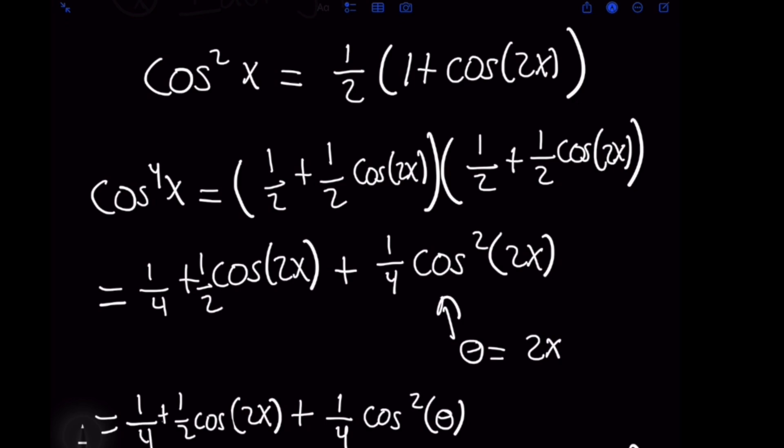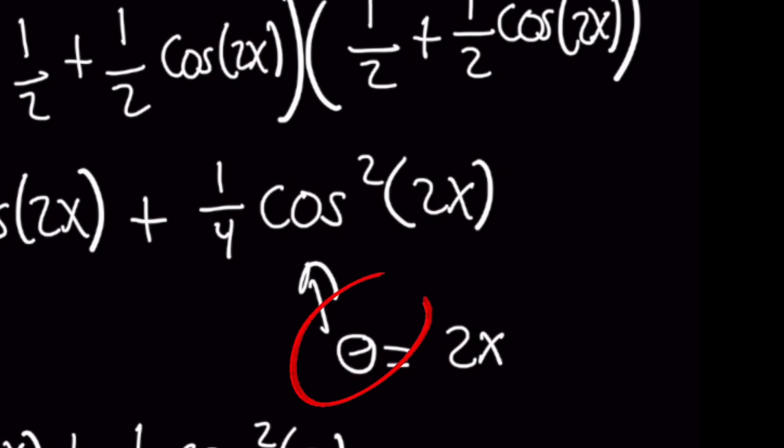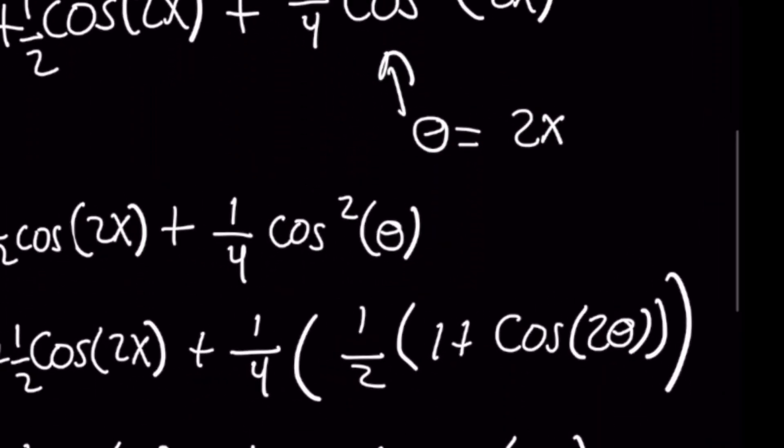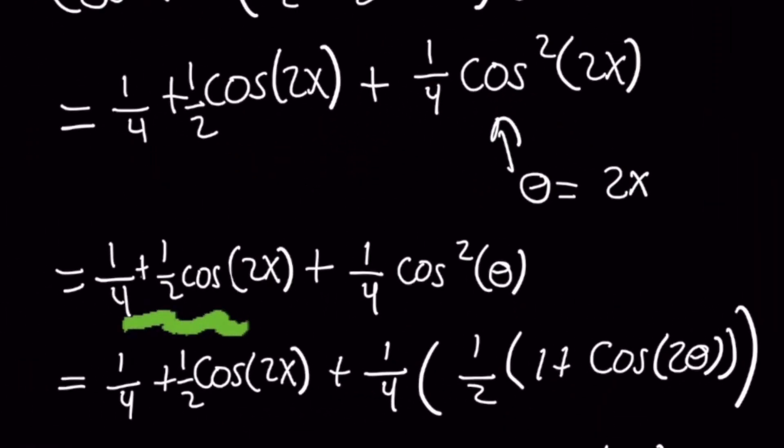I want to show you how we can rewrite that term by letting 2x simply be a new variable called theta. The reason why we're doing this then is when we have one-fourth plus one-half cosine of 2x plus one-fourth cosine squared of theta, we can then reuse that single identity from above for that cosine squared of theta.